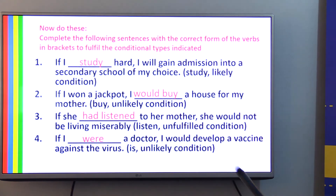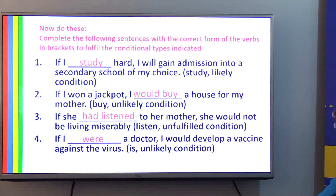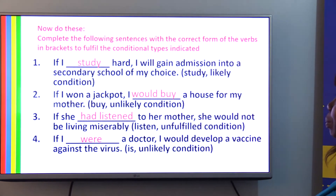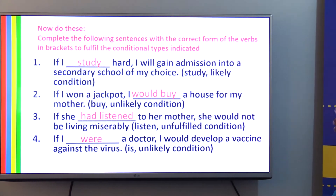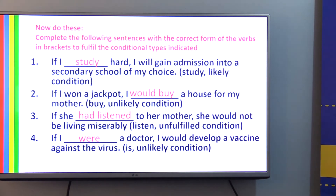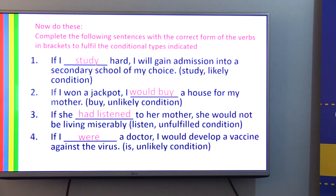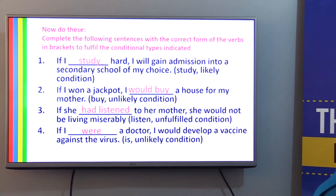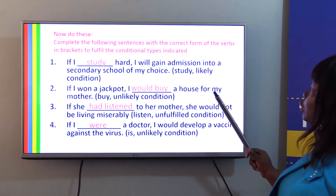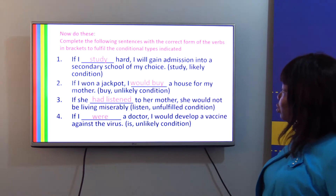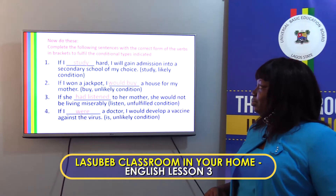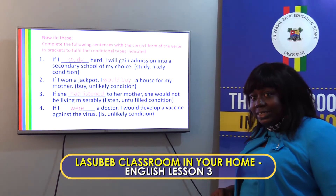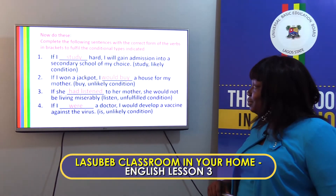'If I won a jackpot, I would buy a house for my mother.' Did you get that correct?